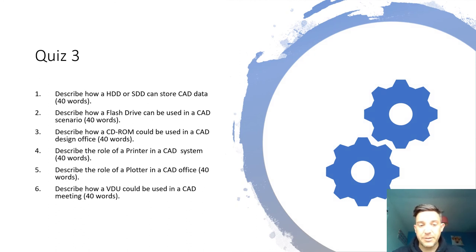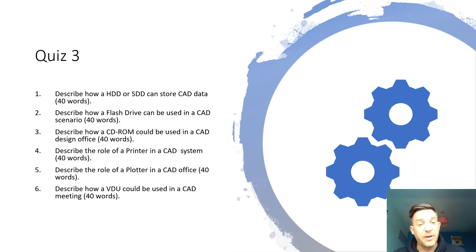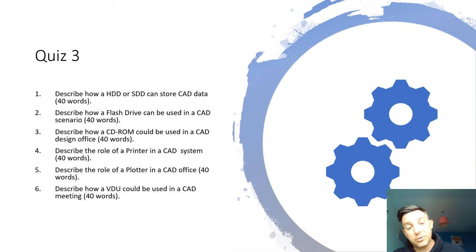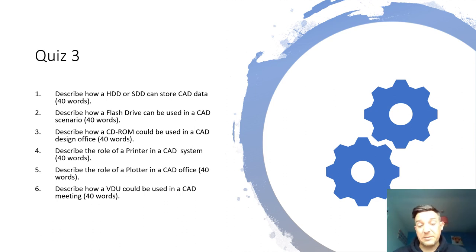There are six questions this time. Describe how a hard disk or solid state drive can store CAD data. Describe how a flash drive can be used in a CAD scenario. Describe how a CD-ROM would be used in a CAD office. Describe the role of a printer in a CAD system. Describe the role of a plotter in a CAD office. Describe how a VDU would be used in a CAD meeting. It's just about getting some notes together ready for the test.